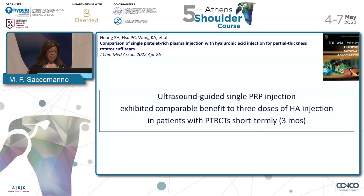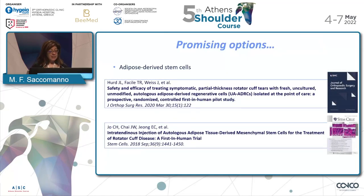However, comparing PRP — which has high cost — to hyaluronic acid, a recent paper showed no differences between a single PRP injection and three doses of hyaluronic acid at three months. Another promising option, still in early pilot study phase, is the use of adipose-derived stem cells as subacromial or intratendinous injection, but we will need to wait for further results.